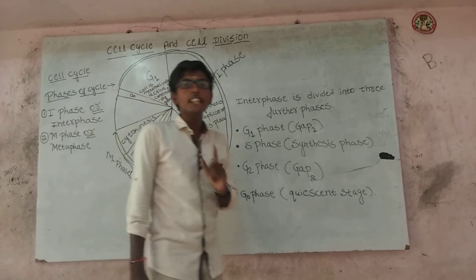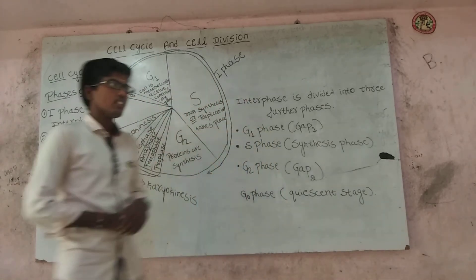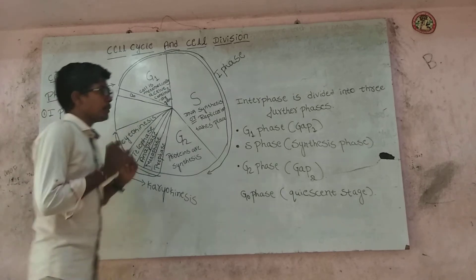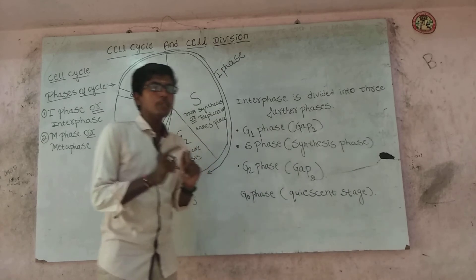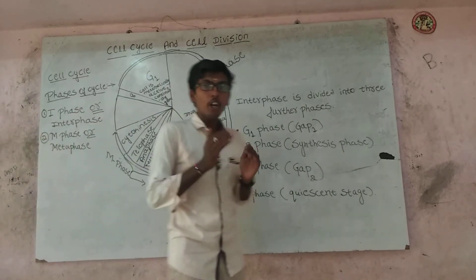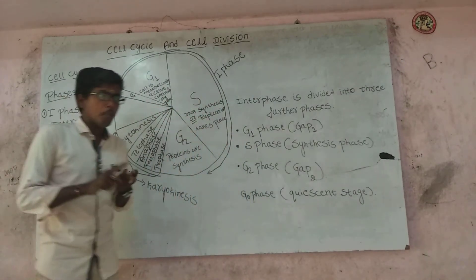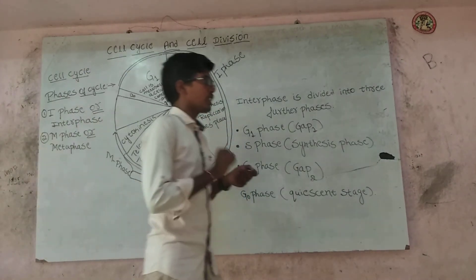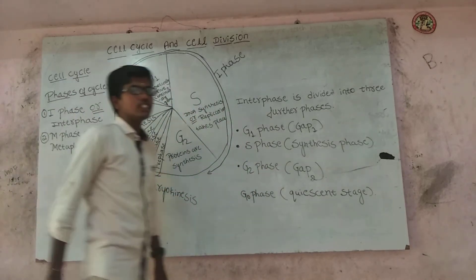Interphase is also known as resting phase. In this phase there is no division of the chromosome in the nucleus, but the cell is metabolically active and undergoes both catabolism and anabolism to prepare for cell division.